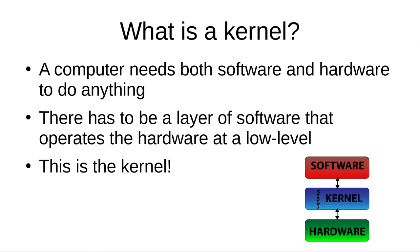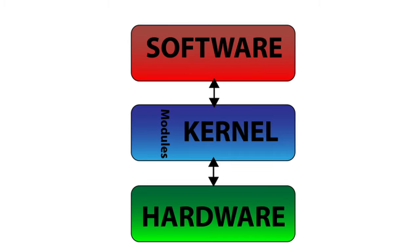What is a kernel? Well, to understand what a kernel is, you must first understand that a computer needs both software and hardware to do anything. So to make it easier for a piece of software — like, for example, a web browser — to interact with the physical components of the computer, it makes sense to have a layer of software that acts as an abstraction between the hardware and the software that needs to use it.